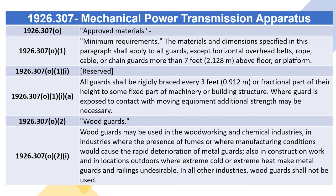The materials and dimensions specified shall apply to all guards except horizontal overhead belts, rope, cable, or chain guards more than seven feet above floor or platform. 1926.307(m)(2) Wood Guards: Wood guards may be used in the woodworking and chemical industries, in industries where fumes or manufacturing conditions would cause rapid deterioration of metal guards, in construction work, and in locations outdoors where extreme cold or extreme heat make metal guards and railings undesirable. In all other industries, wood guards shall not be used.